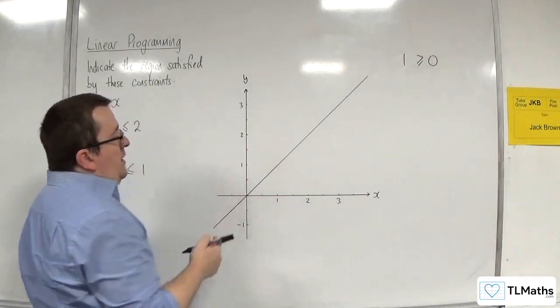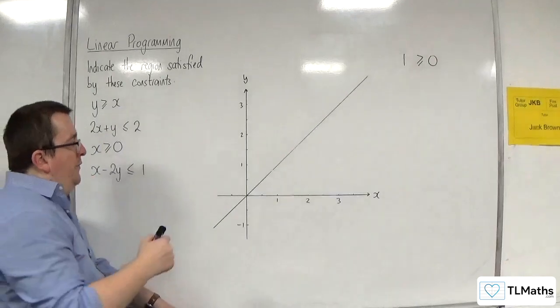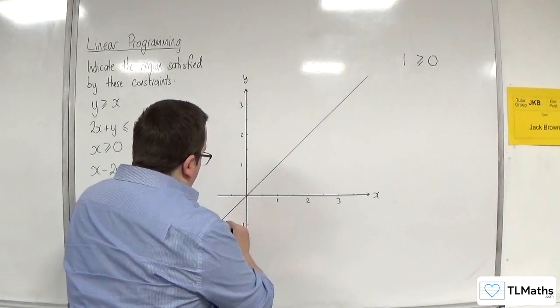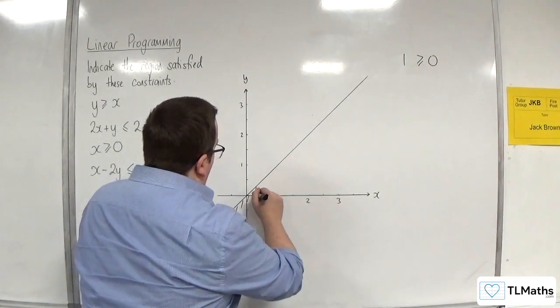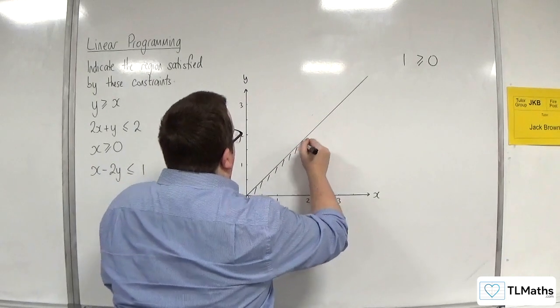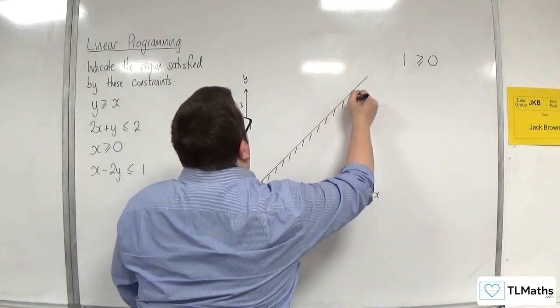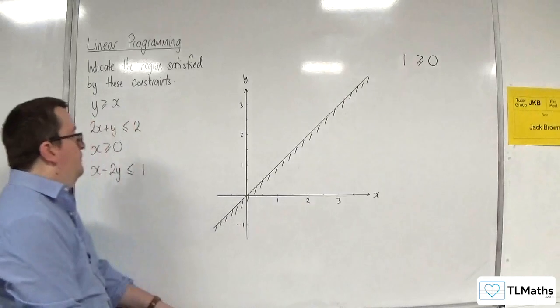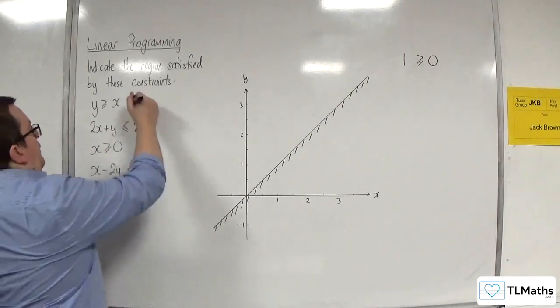So that point is in the region we want. So we want to shade the opposite region, the region we don't want. So that region there. Right, that's the first one.